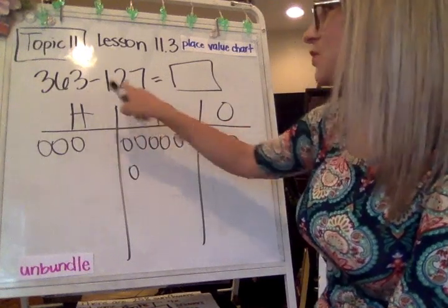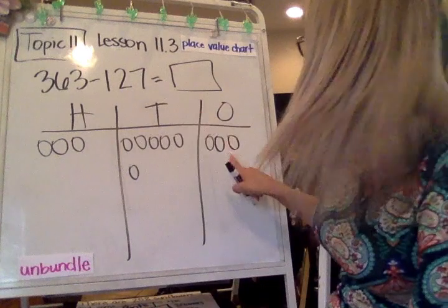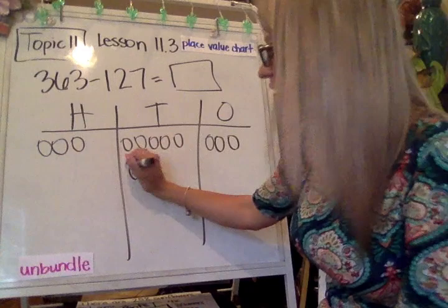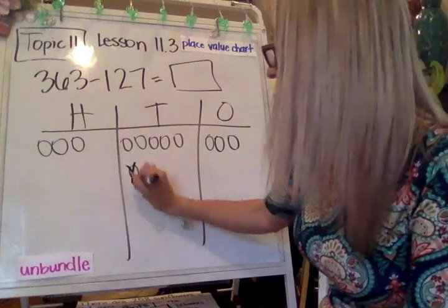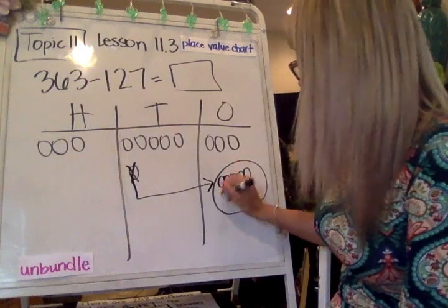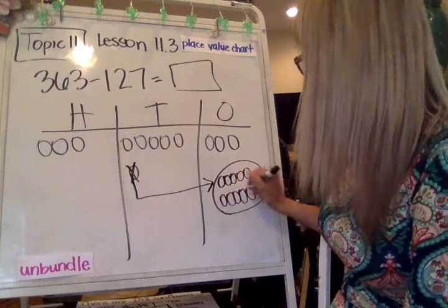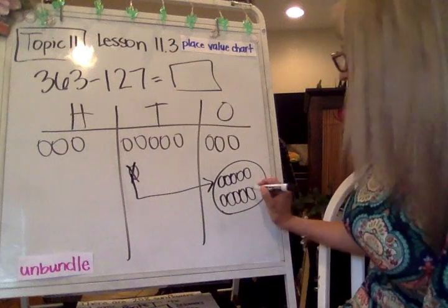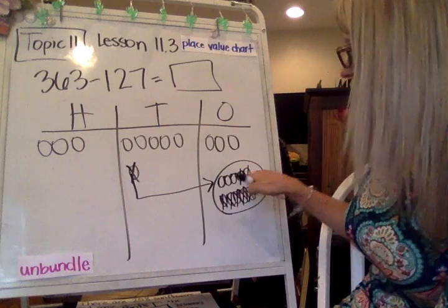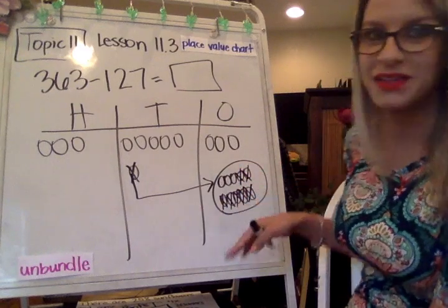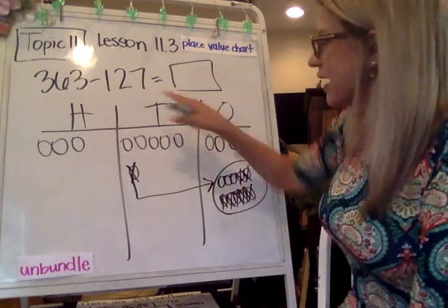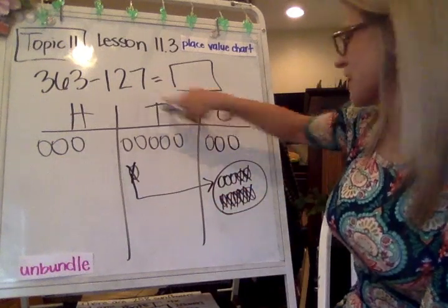I can already see we're going to have a problem because we don't have enough in our ones place. We only have 3 and we need more. So we're not going to just draw all of those over here. We've got to unbundle. So take one of those tens and turn it into 10 ones. Now we can take away 7 from the ones place. 4, 5, 6, 7. Notice how I'm also working backwards for that. That's kind of just an easy way to make sure that you don't miss something.